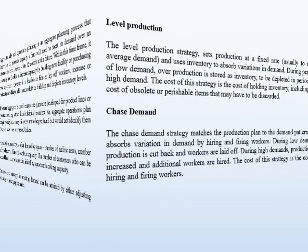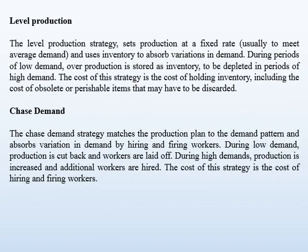There are two methods for undertaking aggregate sales and operations planning. Number 1 is Level Production. The level production strategy sets production at a fixed rate, usually to meet average demand, and uses inventory to absorb variations in demand. During periods of low demand, overproduction is stored as inventory, to be depleted in periods of high demand. The cost of this strategy is the cost of holding inventory, including the cost of obsolete or perishable items that may have to be discarded.